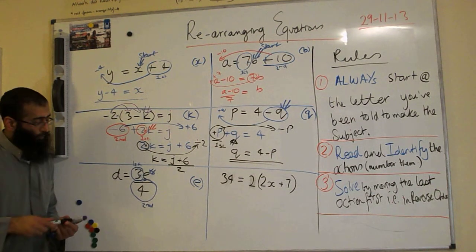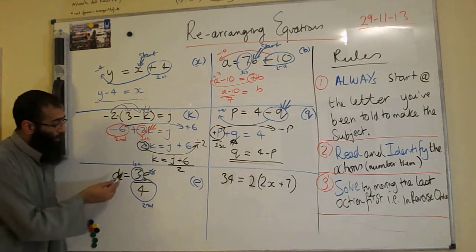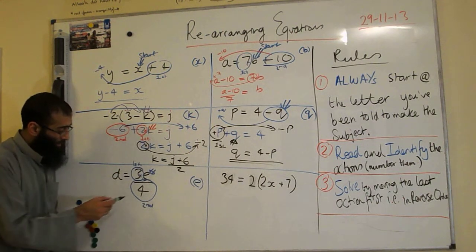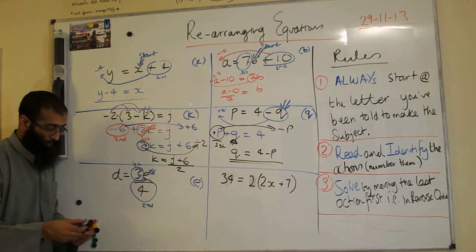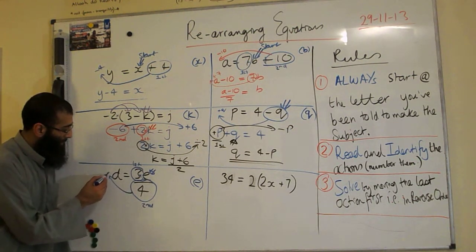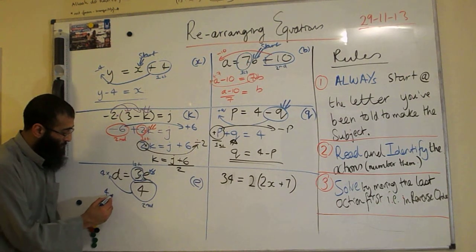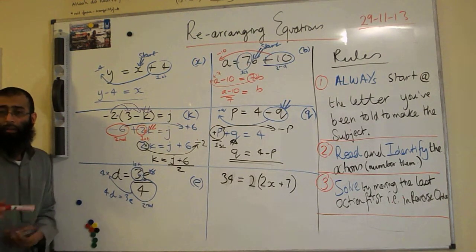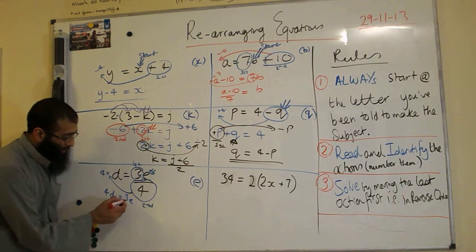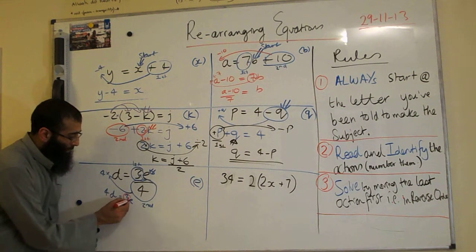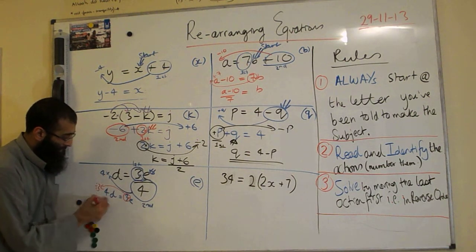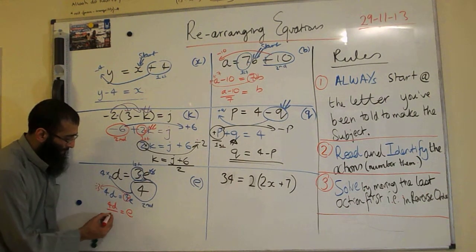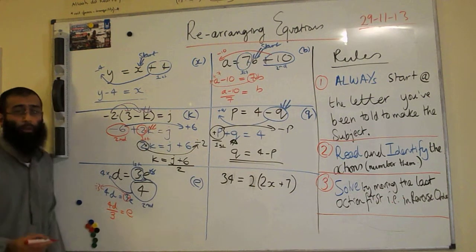Ifrah, when we solve it, which action do I move first? Do I move the first action first or the last second action first? Second. So we say the opposite of divide by 4 is times by 4. So we have 4D is equal to 3E. Last but not least, E is still being multiplied by 3. So the opposite of time by 3 is divide by 3. So you can say here now that E is equal to 4D divided by 3. And we're done.